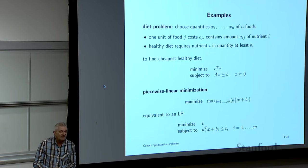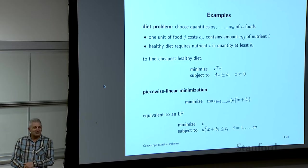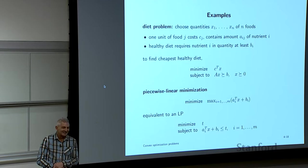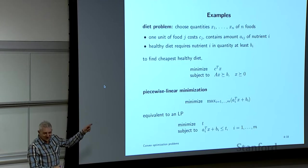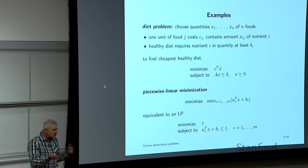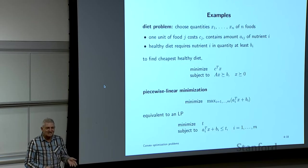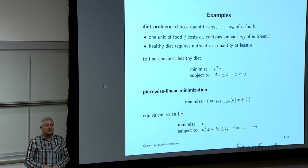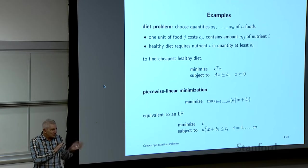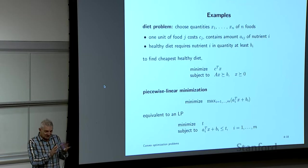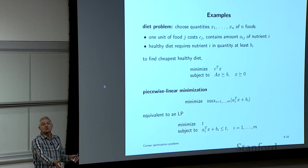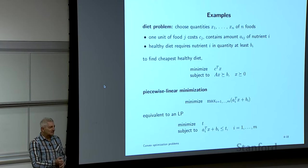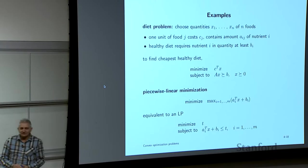These transformations produce equivalent problems, not identical ones. Even with a slightly restricted general form, small transformations that keep everything equivalent — in the computer science sense of 'reduce' — yield an equivalent but not the same problem.